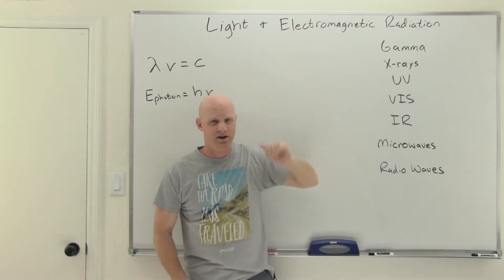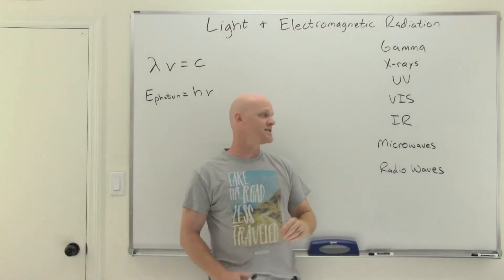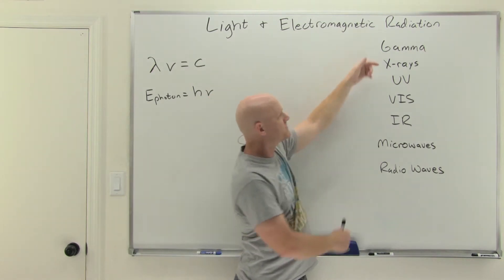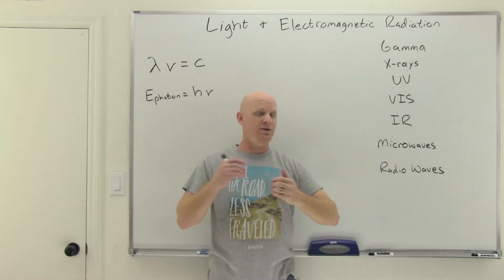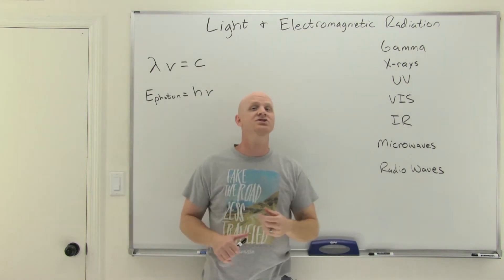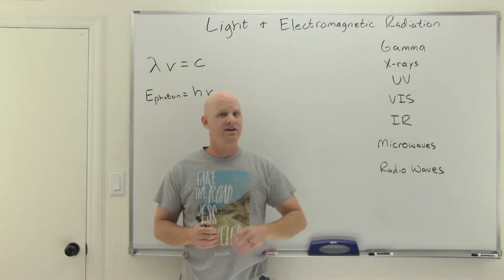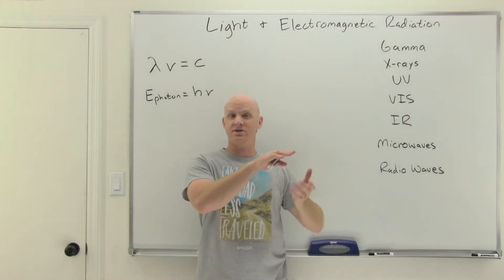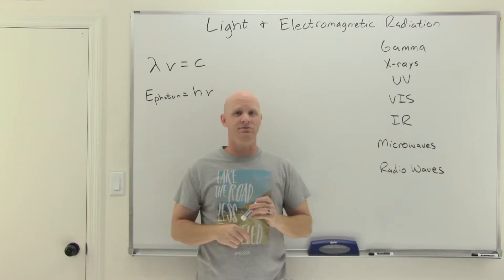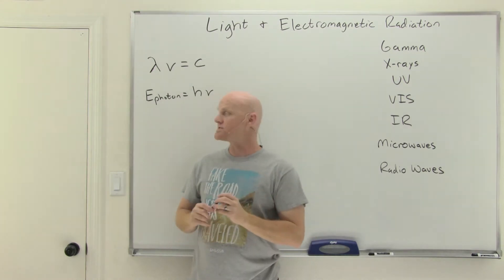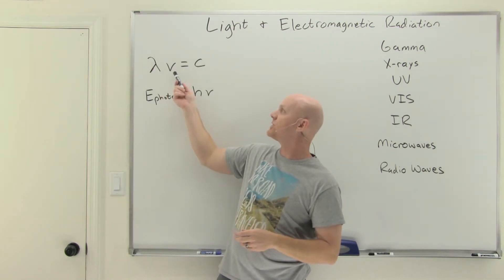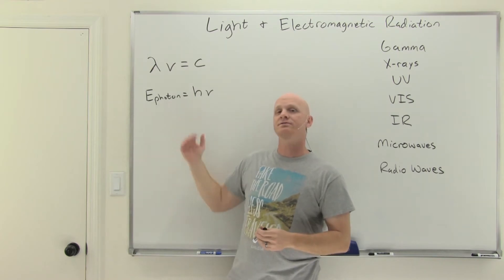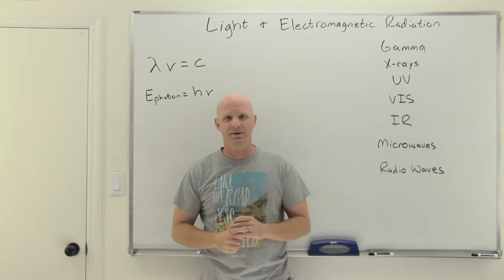Light and electromagnetic radiation will be the topic of this lesson. We're going to take a look at the entire electromagnetic spectrum, of which visible light — the light that you and I can see — is just a very small segment. We'll look at both the wave-like nature of light, but also its particle-like nature. We'll examine relationships between the wavelength, the frequency, and the speed of light, as well as the energy of what we'll define as photons.